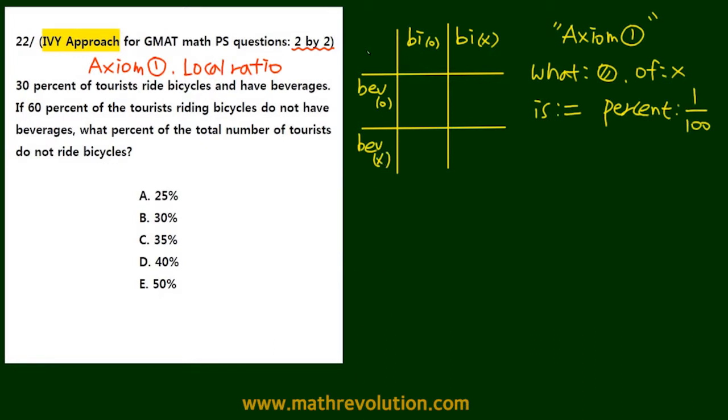Now we're going to call the total 100T. 100 multiple because this is a percentage problem, and T from the related vocabulary, tourist.